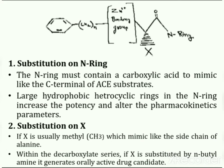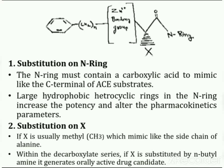Next is substitution on X. X is usually methyl, which mimics the side chain of alanine. Within the dicarboxylate series, if X is substituted by N-butylamine, it generates orally active drug candidates.